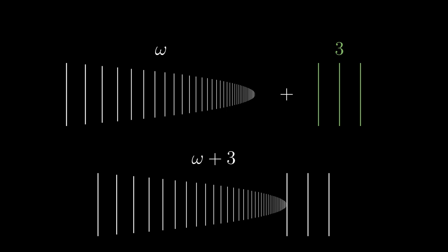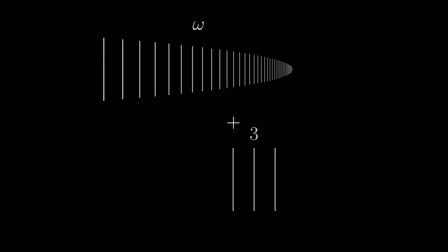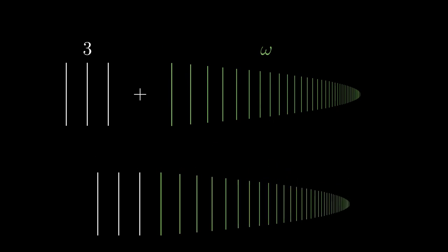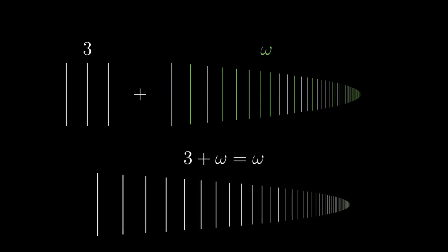The ordinal omega plus 3 is indeed 3 steps longer than omega. But if we add them in the opposite order, 3 plus omega, we obtain just omega. The three elements got lost in the infinity of omega. We can visualize this as well using the index point of view.